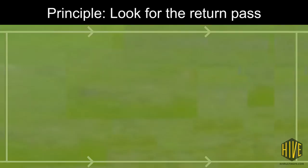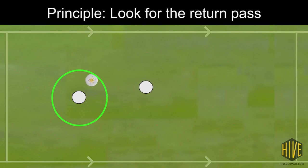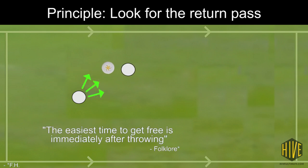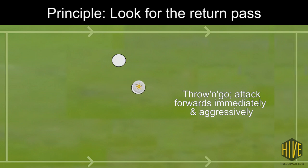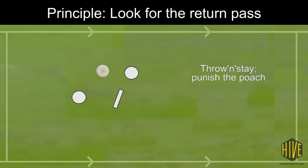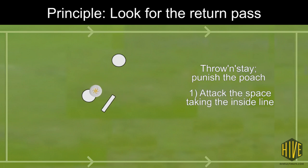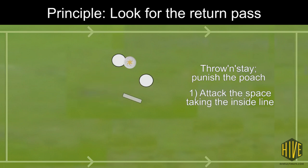So what do we really mean by looking for the return pass? It involves two players: the person who's just thrown the disc and the person who's catching it. The person who's just thrown the disc should look to get the disc back in their hands, as the easiest time to get free is immediately after throwing. So they should either throw and go and attack some viable space aggressively, or they can throw and stay — especially if their defender poaches off them. If they're able to get the disc back in one second, they can use this poach to their advantage.